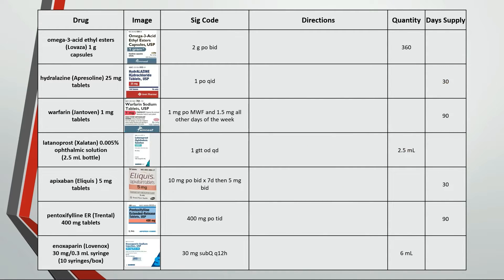Here are a few more cardio drugs. Again, pause the video and try working out the solutions for the empty spaces in this table. This is take two capsules by mouth twice a day. 360 divided by four capsules is a 90-day supply.